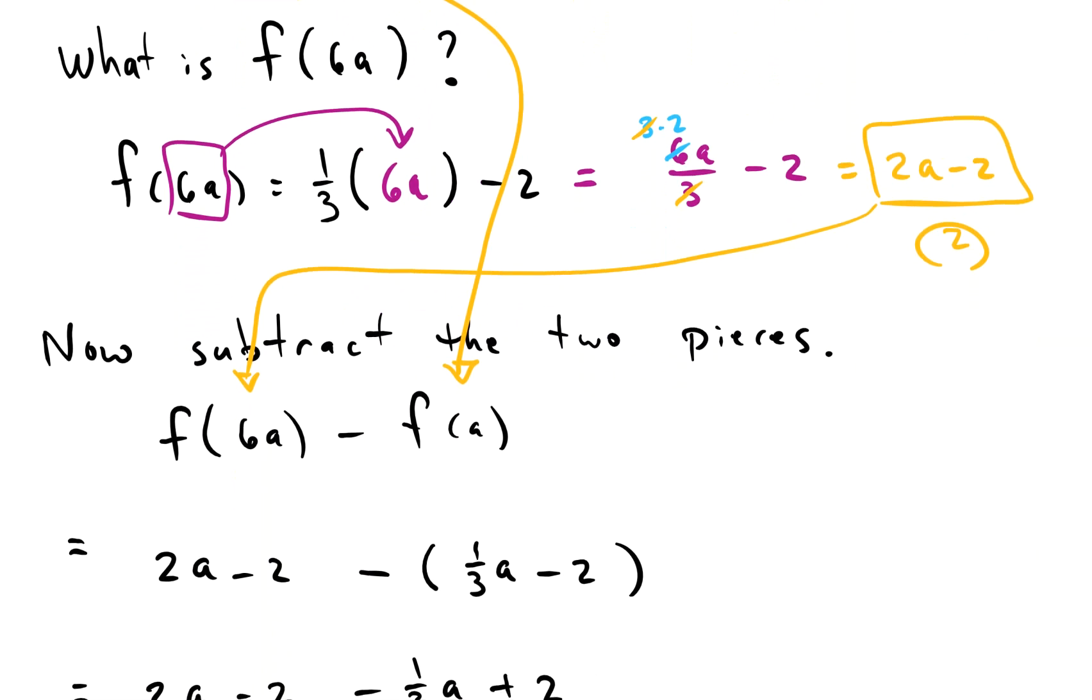So we can see this was the f of 6a, and this was the f of a. And notice we also have the minus sign.